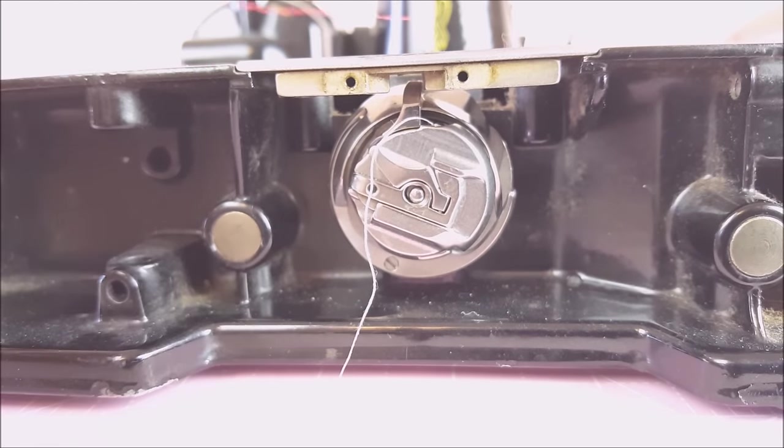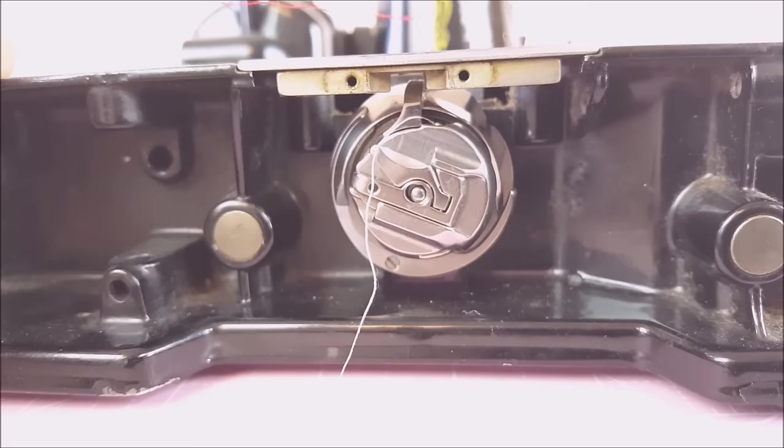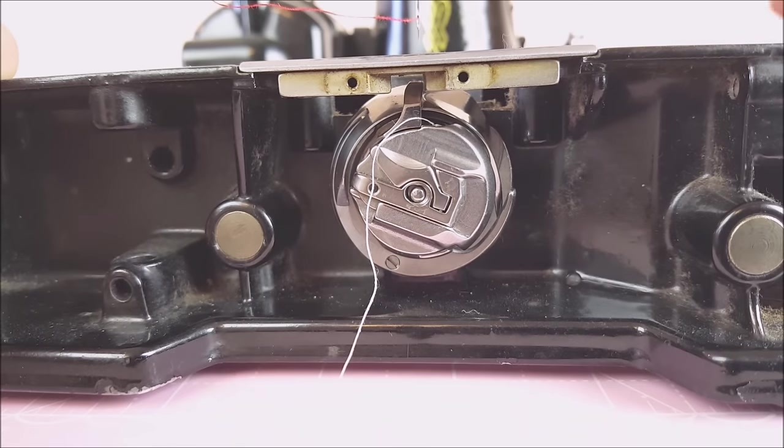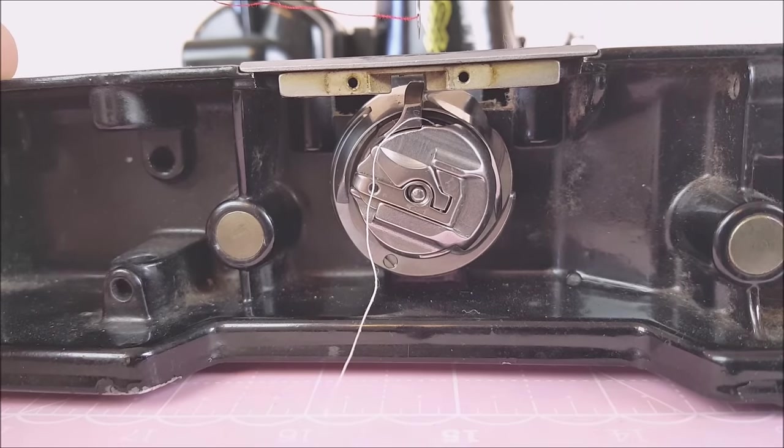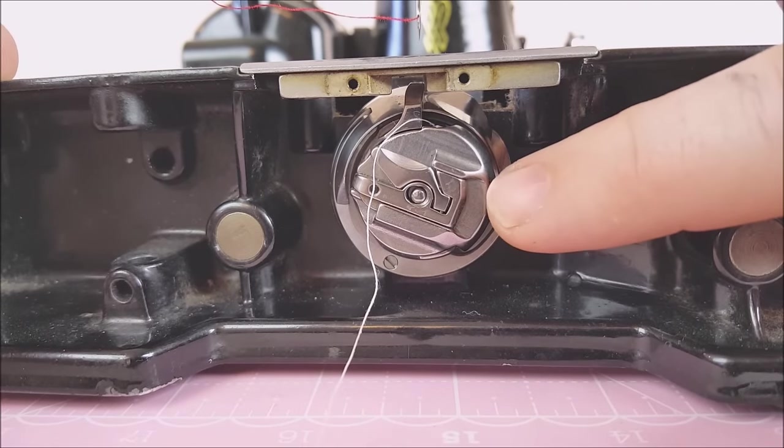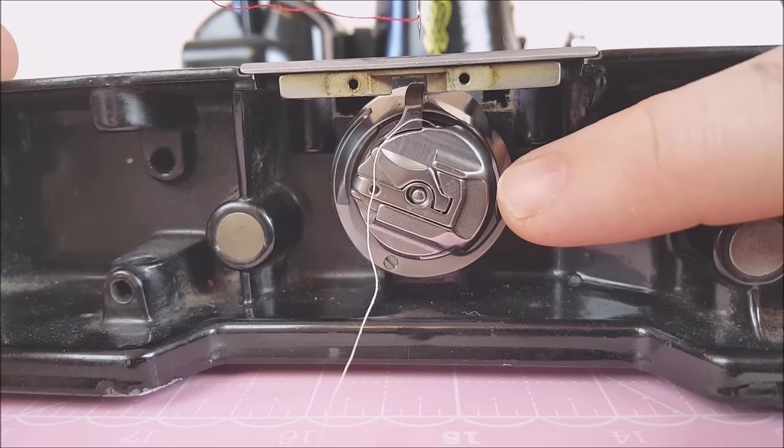So what happens here, one of the problems amongst many with these reproduction bobbin cases is that when you try to sew with it, they have a hard time getting properly seated on the bobbin case base.